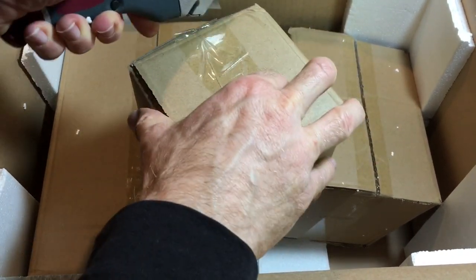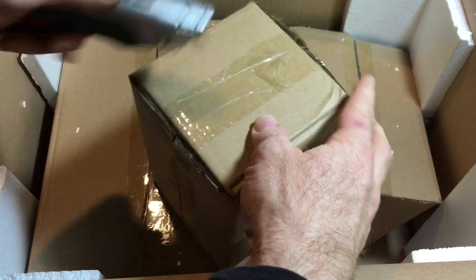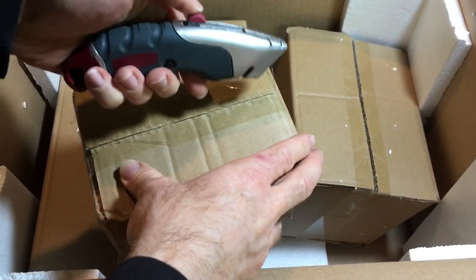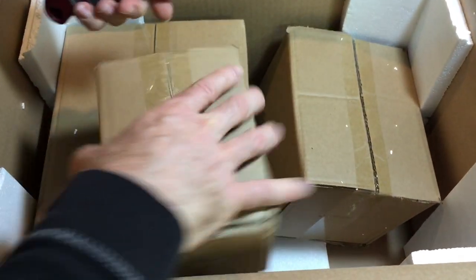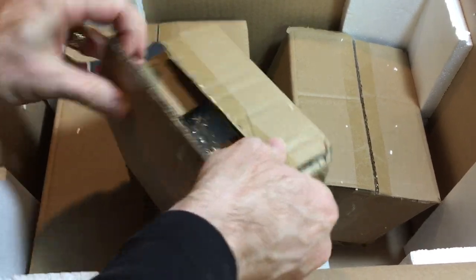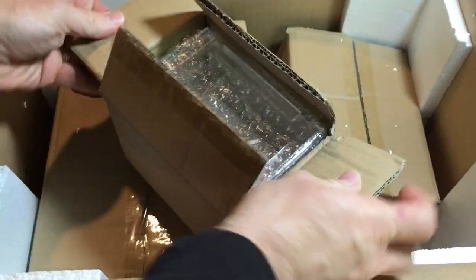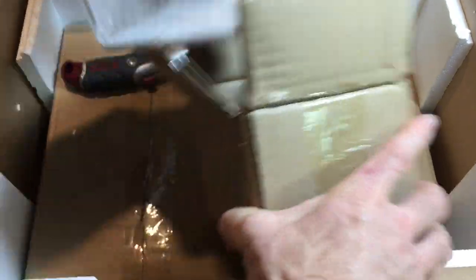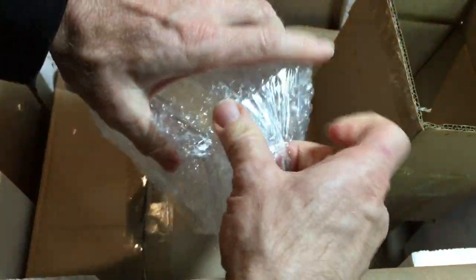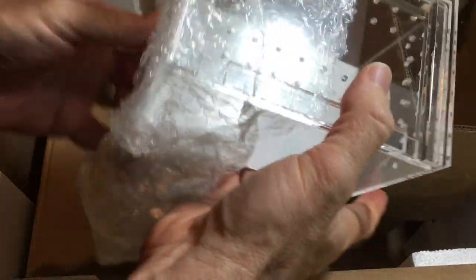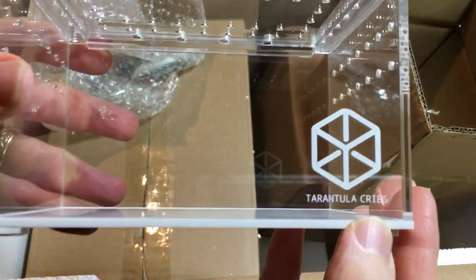And here's another container that's quite a bit larger than the one I just opened. So let's check this one out. Oh, look at that. Let's see. Let's get that tape loose here. Let's see this one. You can see the Tarantula Cribs logo right there. Very cool.